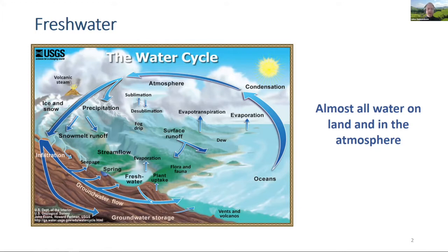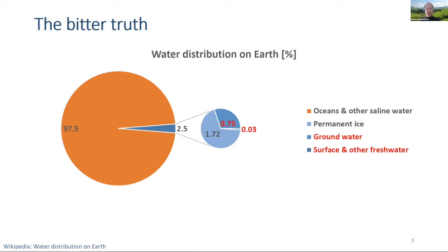But there's a general problem with this type of depiction, which brings me to what I would refer to as the bitter truth: the distribution of water on Earth. The vast majority of all available water is stored in the oceans or other saline water. The freshwater resources we are typically interested in only make up a small fraction of the total, and of all freshwater, about two thirds are stored in the form of ice in the big ice caps.